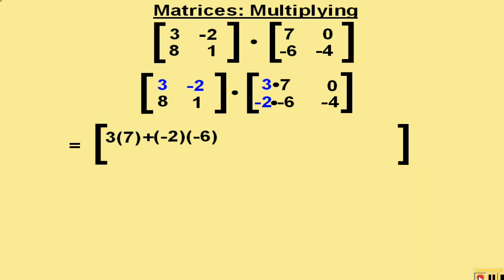We then move the 3 and negative 2 to the 0 and negative 4 spots and follow the same procedure. 3 times 0 plus negative 2 times negative 4. And this gives us the second number in the answer matrix.